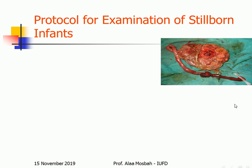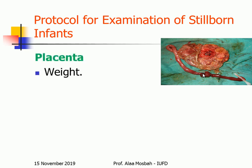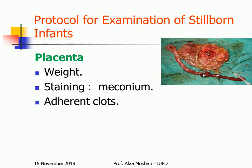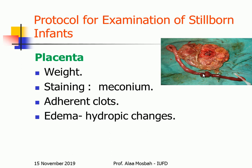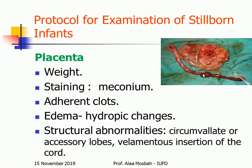In this picture you can see a true knot in the umbilical cord — this is a placenta in a case of intrauterine fetal death. You can see the stained membrane and the true knot, which obstructs blood flow to the fetus, causing sudden stoppage and intrauterine fetal death. For the placenta: assess weight, meconium staining, adherent clots, edema or hydropic changes (which occur in diseases like erythroblastosis fetalis or syphilitic placenta), and structural abnormalities such as circumvallate placenta, accessory lobes, velamentous insertion of the cord, or other abnormalities.